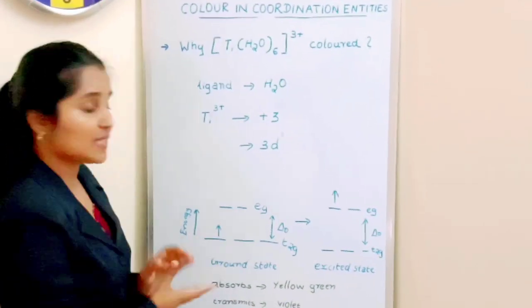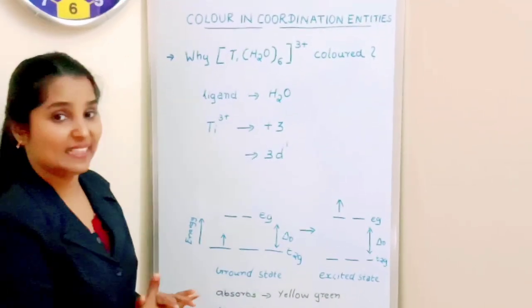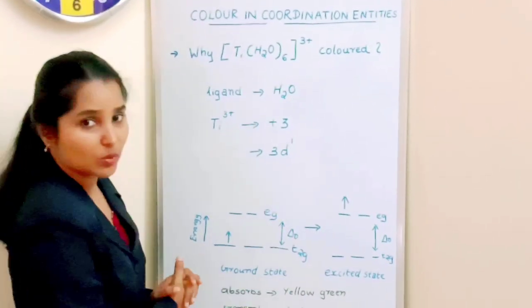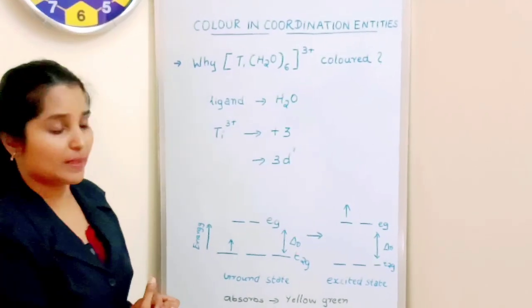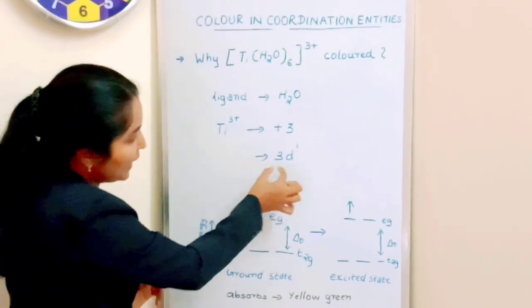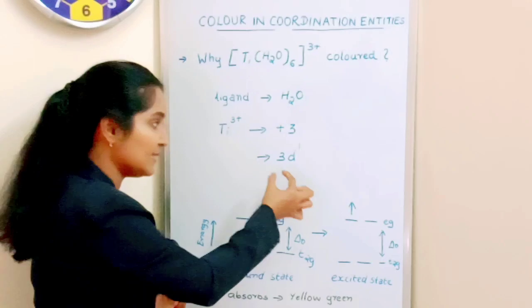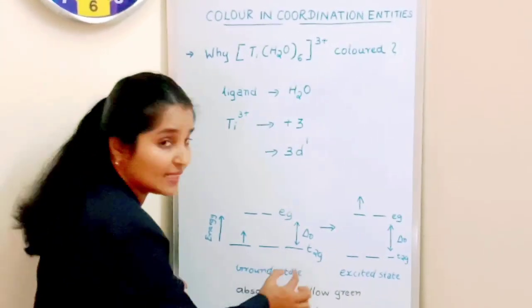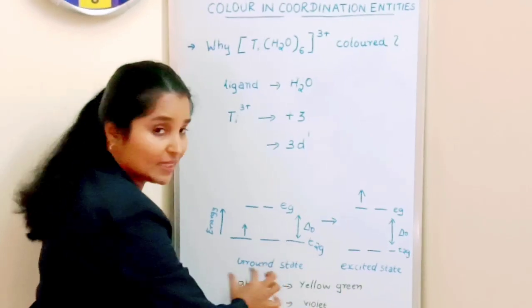These two sets of orbitals will be separated by an energy gap of delta O (delta naught) since it is an octahedral complex. This one unpaired electron present in the 3d orbital of the central metal ion will be at the lower energy level, the T2G set of orbitals, in the ground state.